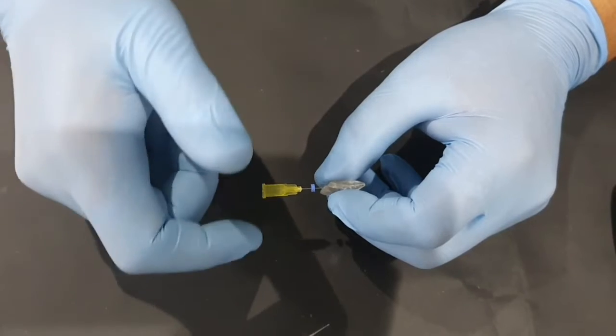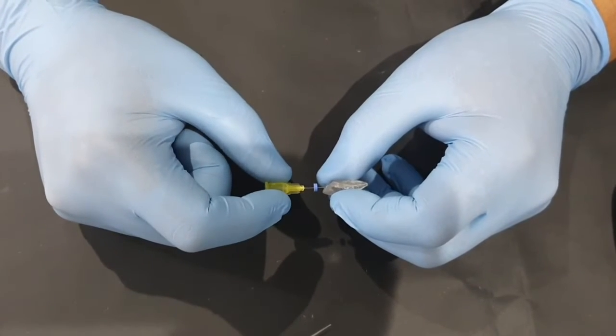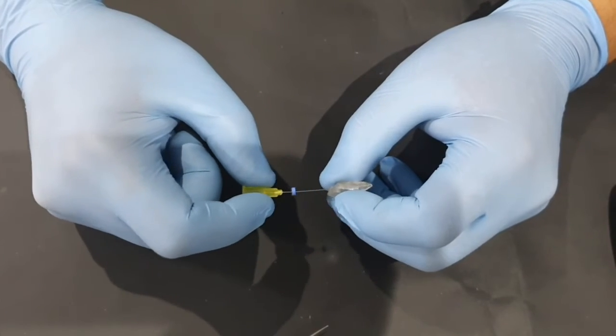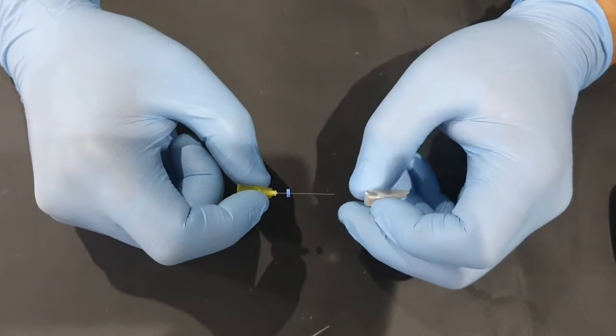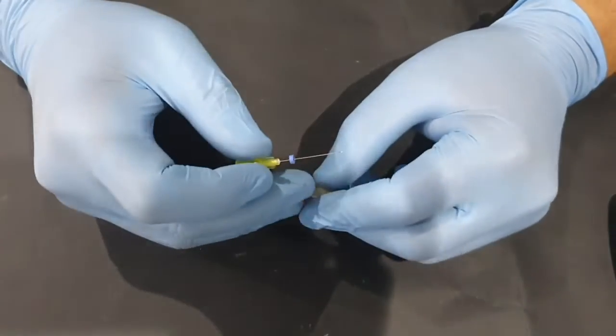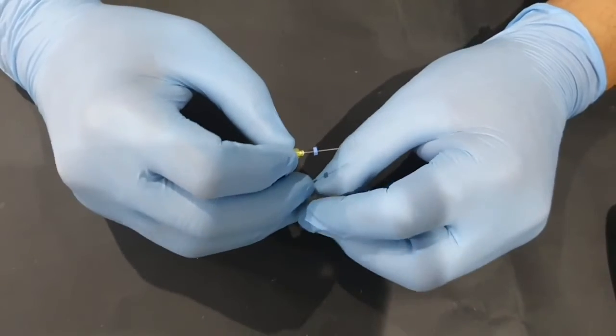So in this situation again you will have two problems either your irrigants will not get delivered close to the apex because there is a curvature or if the needle gets bound again you will have the same kind of problem you had with your beveled needles. That is the side-vent needle can also turn into a dangerous delivery system and can force the irrigants out of the apex if you end up applying too much amount of pressure.